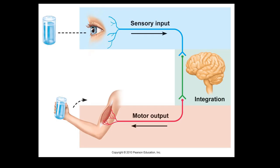Once the integration system understands what's going on, it can send out a motor output, which can be as simple as contracting a muscle to take a drink, or as complex as releasing insulin to lower blood sugar level. So motor output isn't just about skeletal muscle - it's also about glands in your body as well.